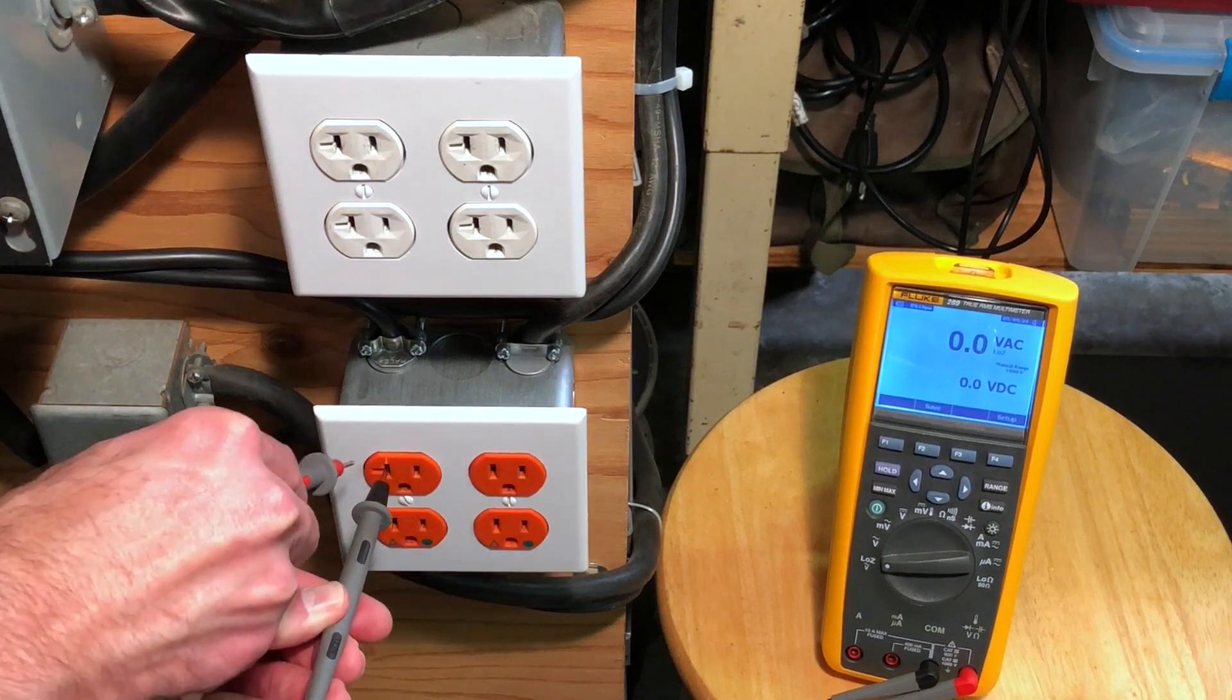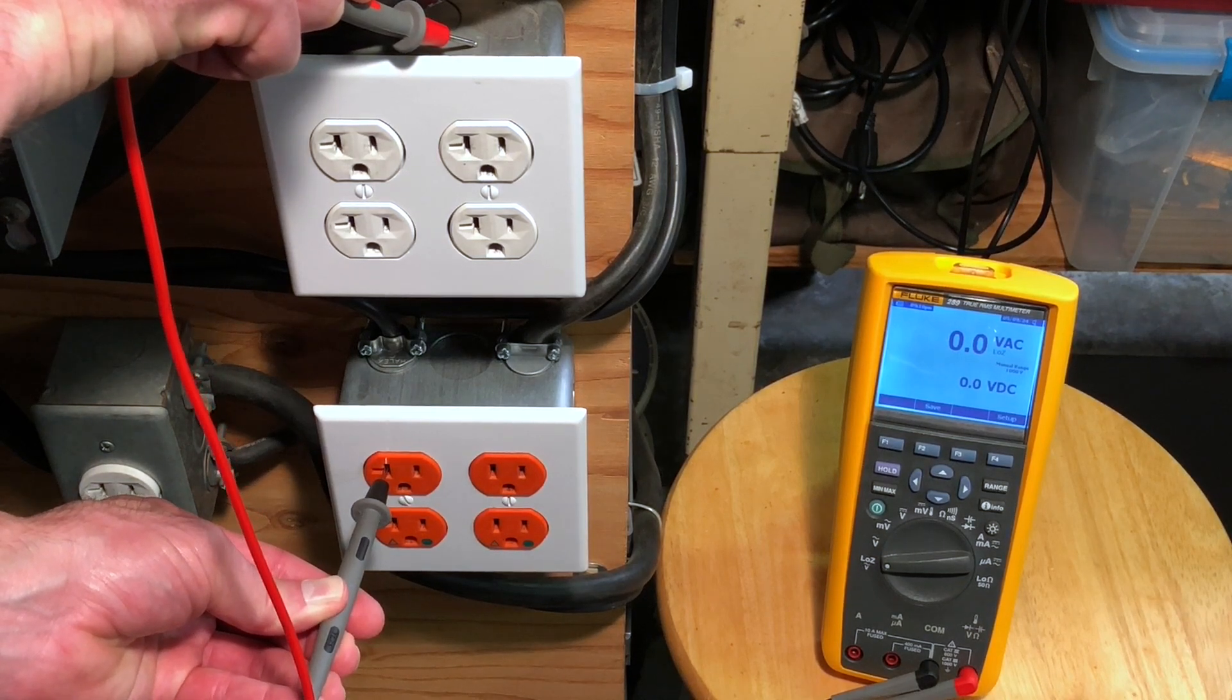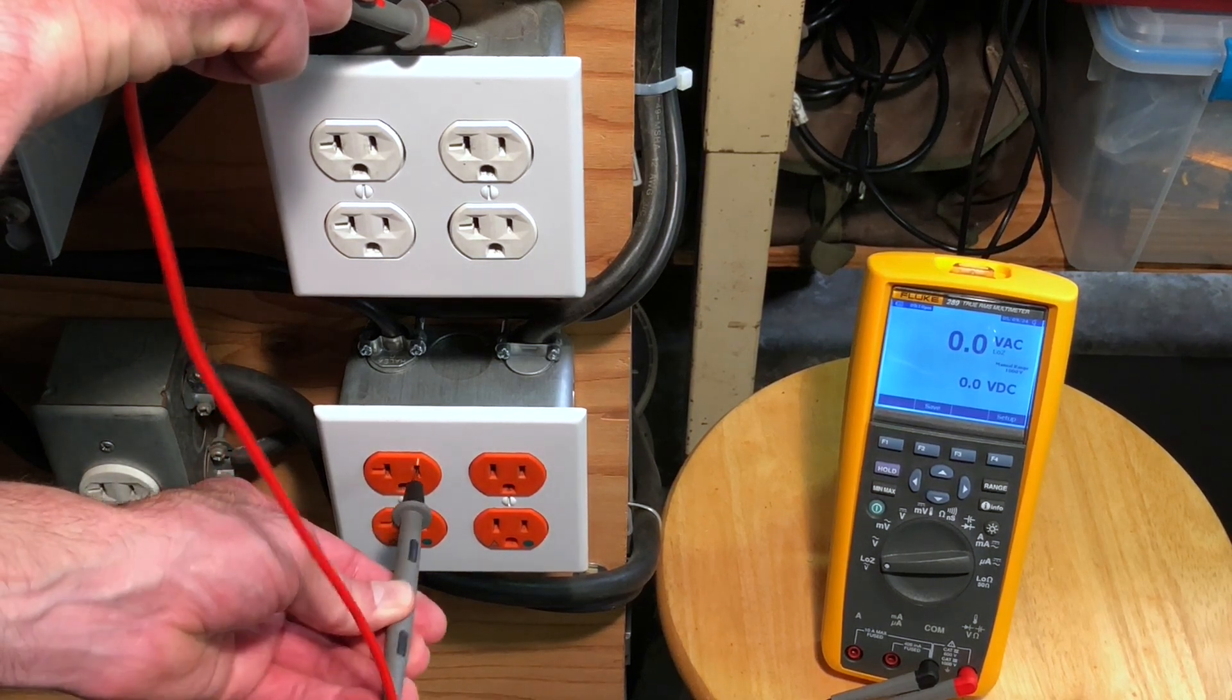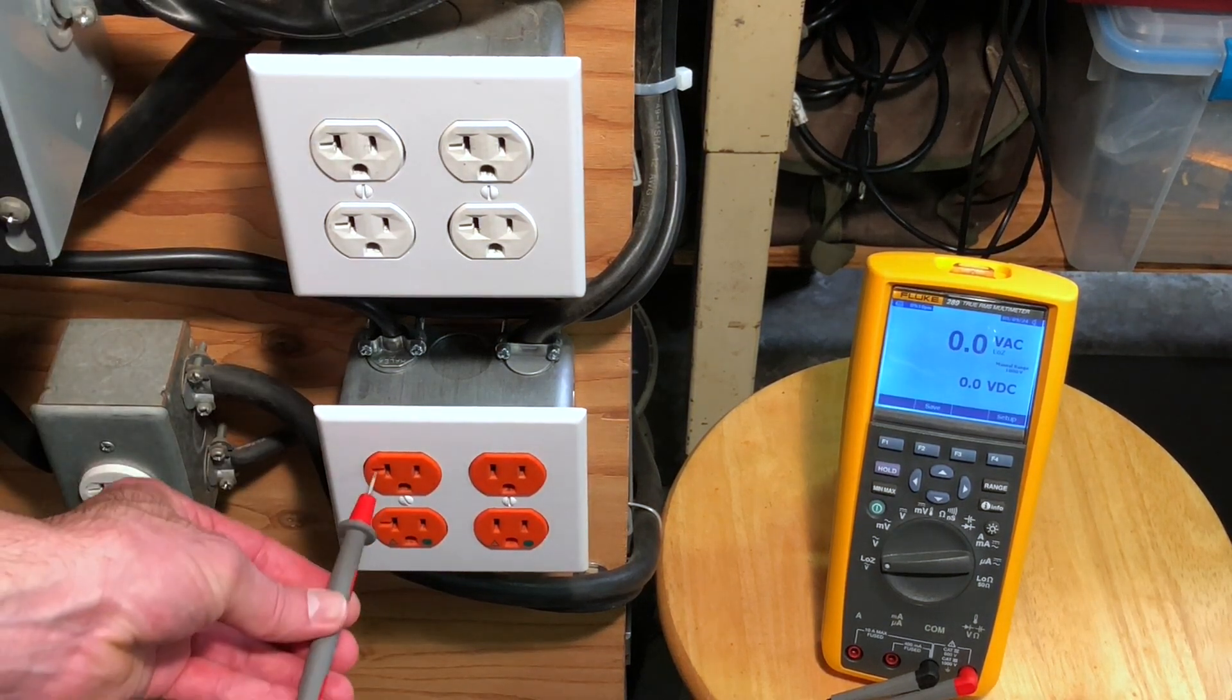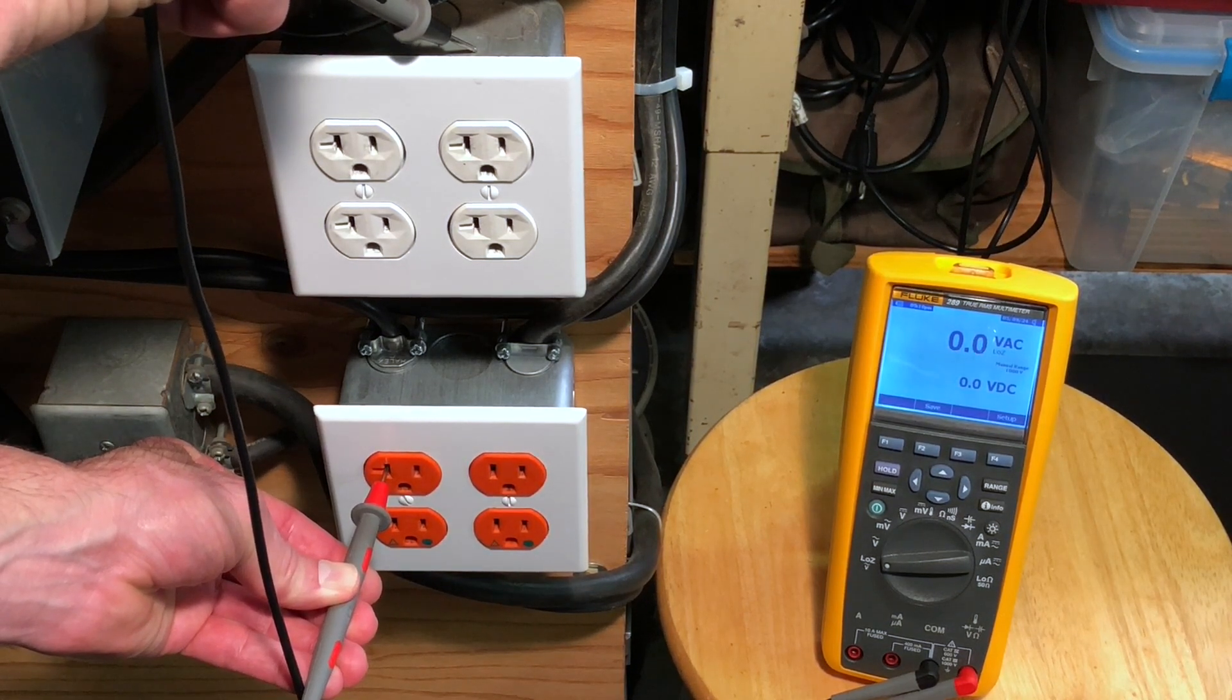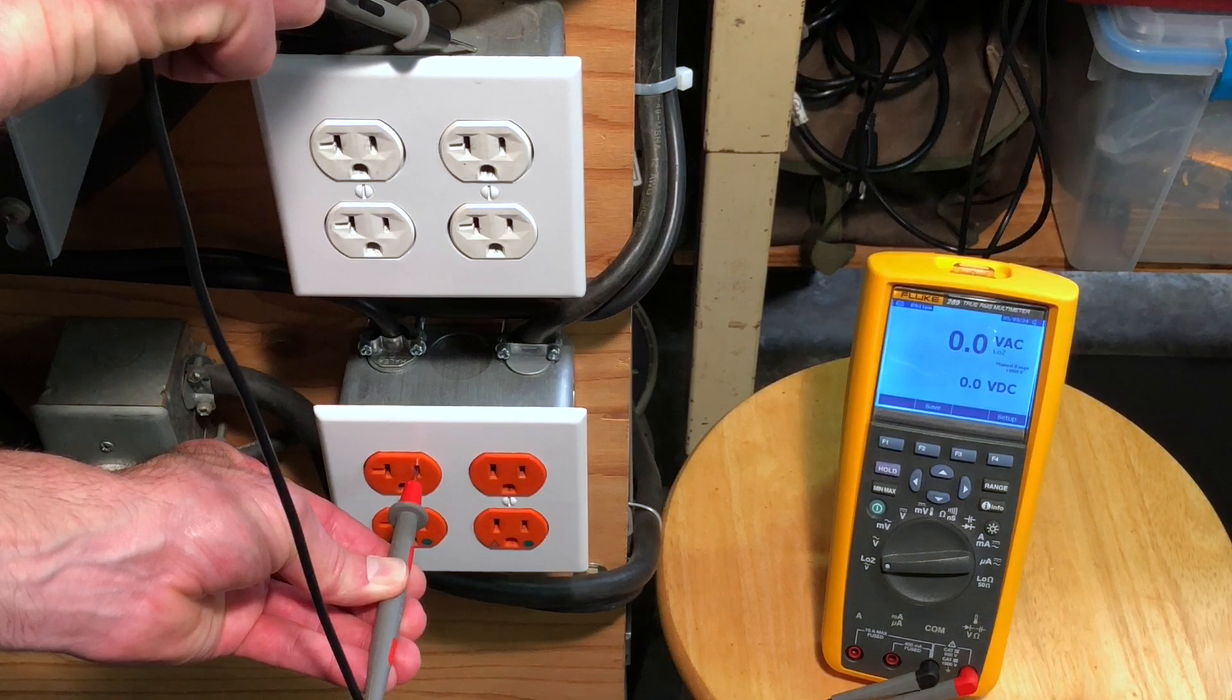Now, if we go to the neutral side and go over to earth ground, nothing, absolutely nothing. Notice the top line, zero volts. If I move this over to the other side, zero volts. It doesn't matter if I reverse the test leads, like so, a tenth of a volt fluctuates, now it's at zero. Go over to the other side, zero volts.